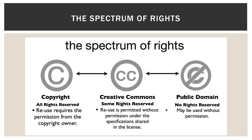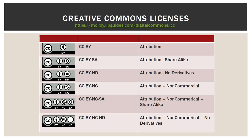In the middle are Creative Commons licenses. A good hint that something is actually open access and not just a free thing you found on the internet is that it will have a Creative Commons license. Since it's in the middle, you can view it as some rights reserved — reuse is permitted without permission under the specifications shared in the license. There are six Creative Commons licenses, and this chart is also available on the Digital Commons LibGuide.